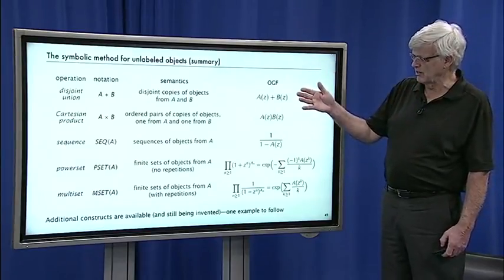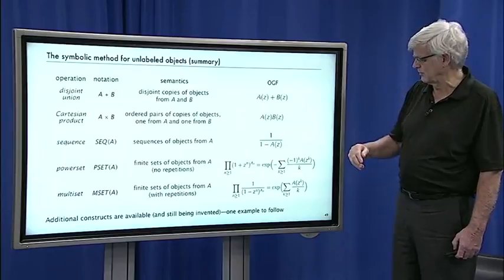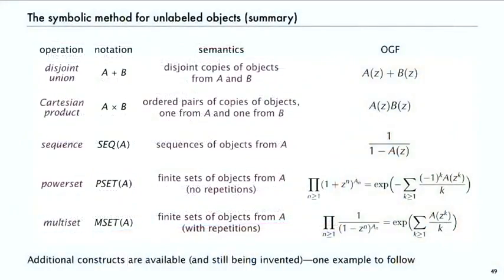These are the ones we've discussed so far in this lecture: disjoint union, Cartesian product, sequence, power set, and multiset. Every one of these has immediate translation to a generating function, and there's many others that are available and still being invented.